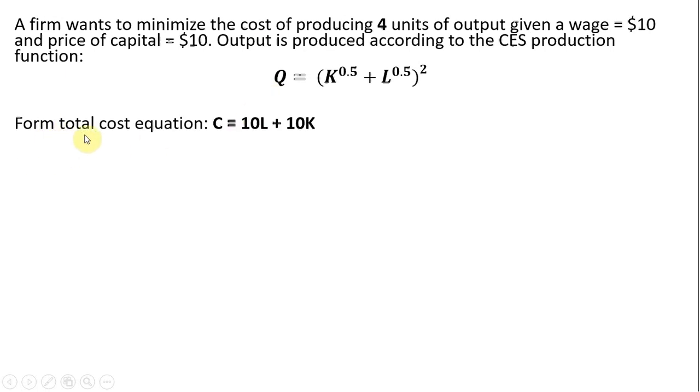We're going to first form the total cost equation, which is C equals 10L plus 10K. The 10 in front of the L is the wage. The 10 in front of the K is the price of capital, or the rental rate of capital.